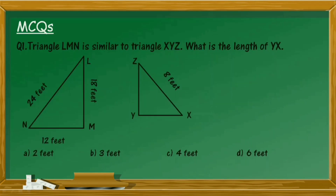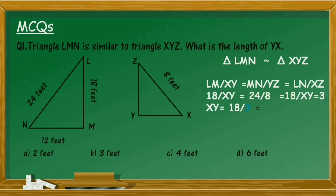Question 1: Triangle LMN is similar to triangle XYZ. What is the length of YX? Since the triangles are similar, their corresponding sides are proportional: LM/XY equals MN/YZ equals LN/XZ. Substituting the values and cross-multiplying, you will get the length of YX as 6 feet. The correct option is option D.